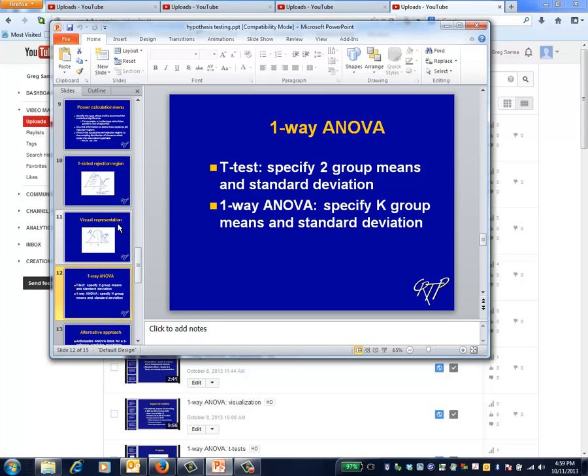To extend this idea from the t-test to the one-way ANOVA, for the t-test, the quantities the investigator must specify are the two group means and the standard deviation of the data within any of the study groups. For the one-way ANOVA, the investigator must now specify K group means and also the relevant standard deviation.